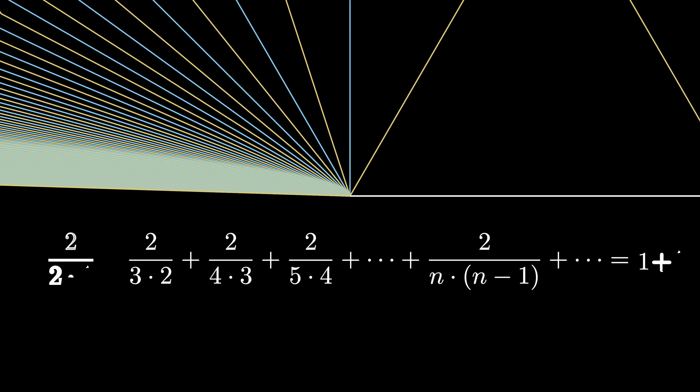If we then add 2 over 2 times 1 on the left and 2 over 2 times 1 on the right, which is 1, then we get our first famous infinite sum.